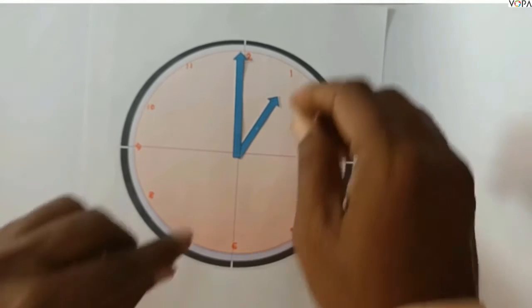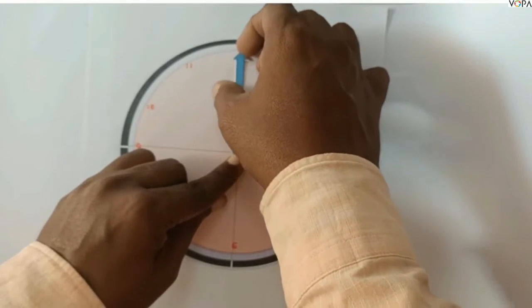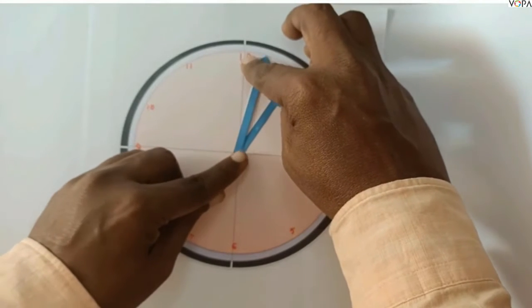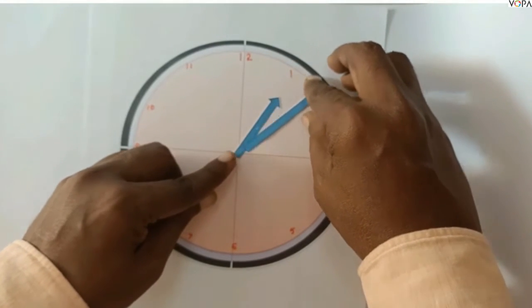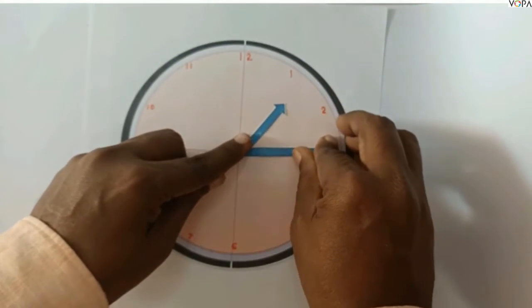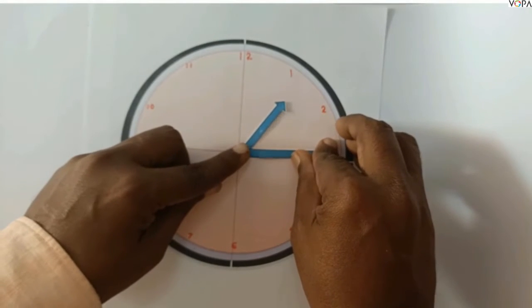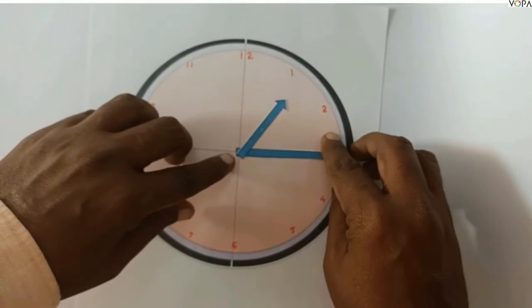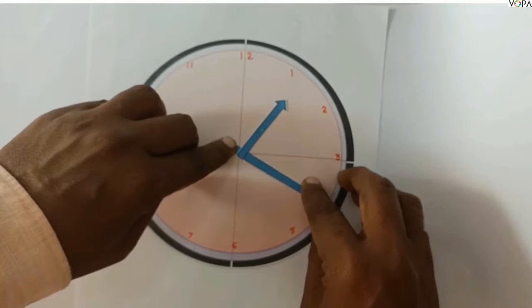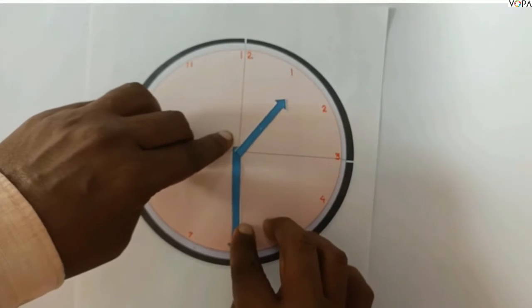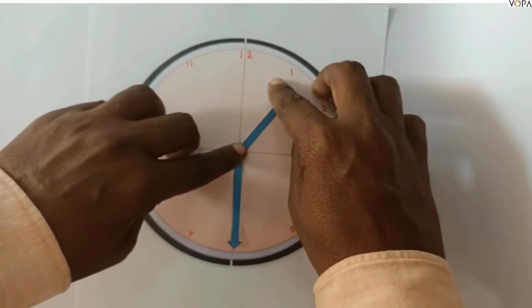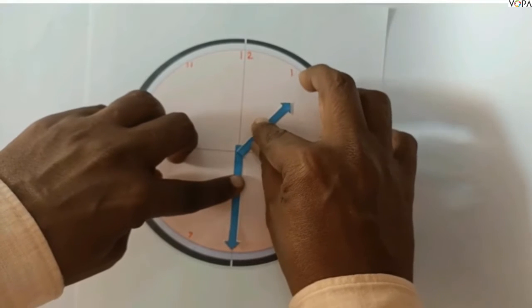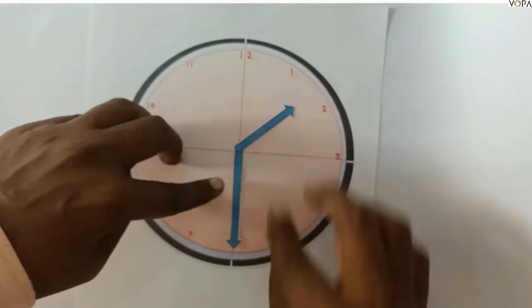When this long hand moves faster compared to the short hand, at that time this is one past quarter. When this minute hand goes to six and short hand comes between one and two, it means one past 30 minutes.